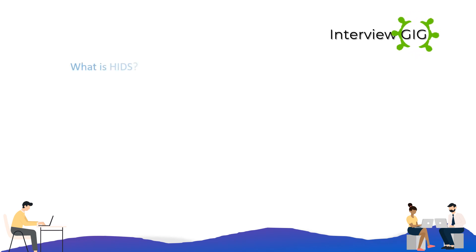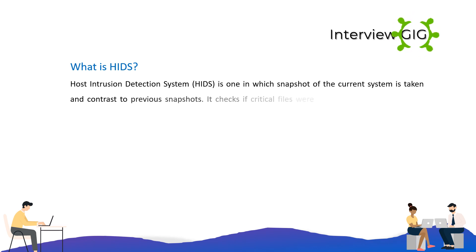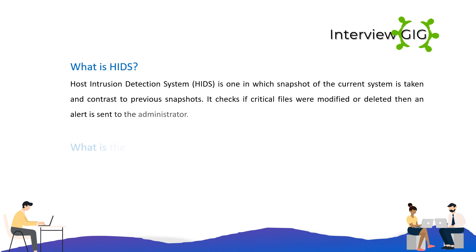What is HIDS? A Host Intrusion Detection System (HIDS) is one in which a snapshot of the current system is taken and contrasted with previous snapshots. It checks if critical files were modified or deleted, and if so, an alert is sent to the administrator.